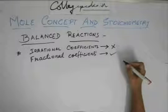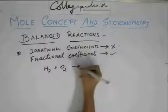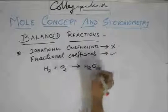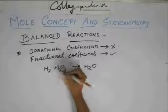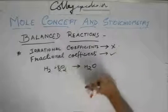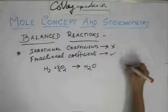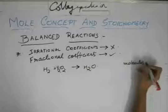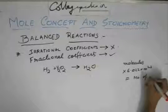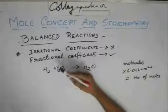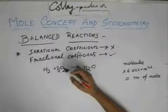You might be wondering why fractional coefficients can be used — you can't have 0.5 or 0.25 of a molecule. Suppose you have H2 plus O2 giving H2O. The balanced form is 2H2 plus O2 gives 2H2O. You might also write H2 plus half O2 gives H2O, and wonder how there can be half a molecule of oxygen. But the number of molecules multiplied by 6.022×10²³ gives you moles. There can't be half a molecule of O2, but there can be half a mole of O2 — half a mole is perfectly possible.